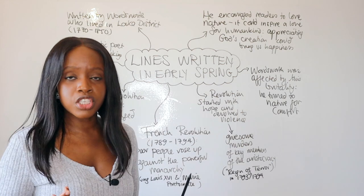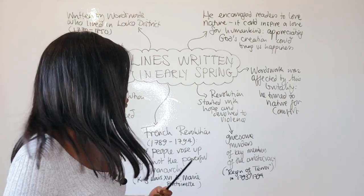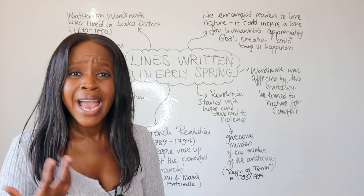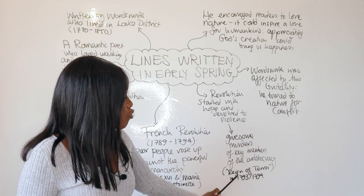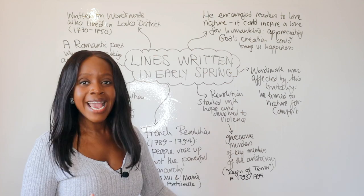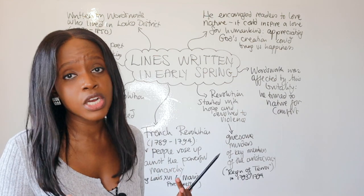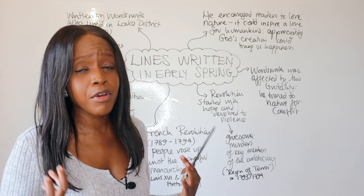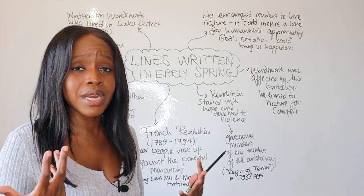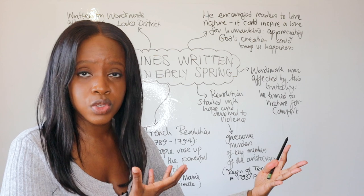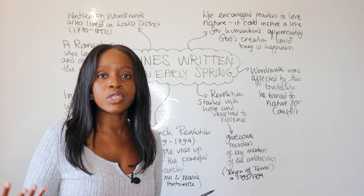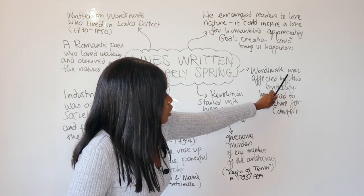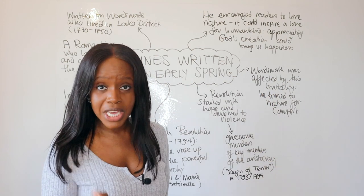Unfortunately, the French Revolution devolved into violence. There were many gruesome murders, especially in the final two years, where key members of the aristocracy were being killed. This period was called the Reign of Terror, between 1793 and 1794. Wordsworth became very disillusioned and unhappy when he realized this revolution, started with so much promise, had actually devolved into cruelty and violence because of human nature.